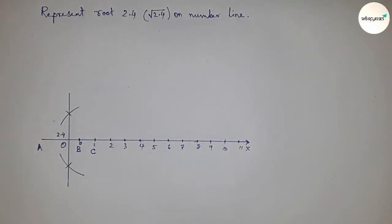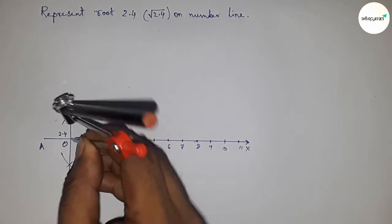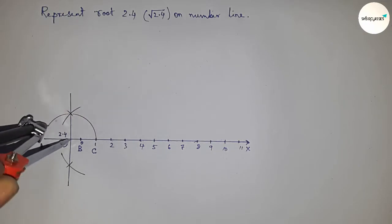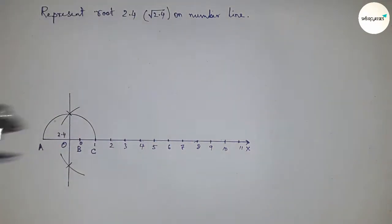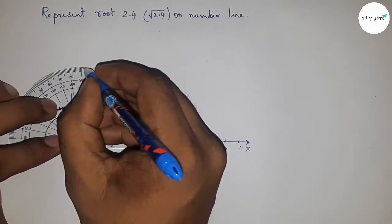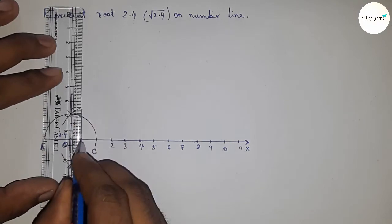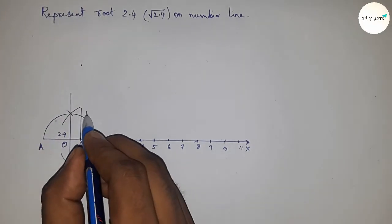Taking the distance OA equals OC, draw a semicircle. Next, draw a 90-degree angle at point B by using a protractor.